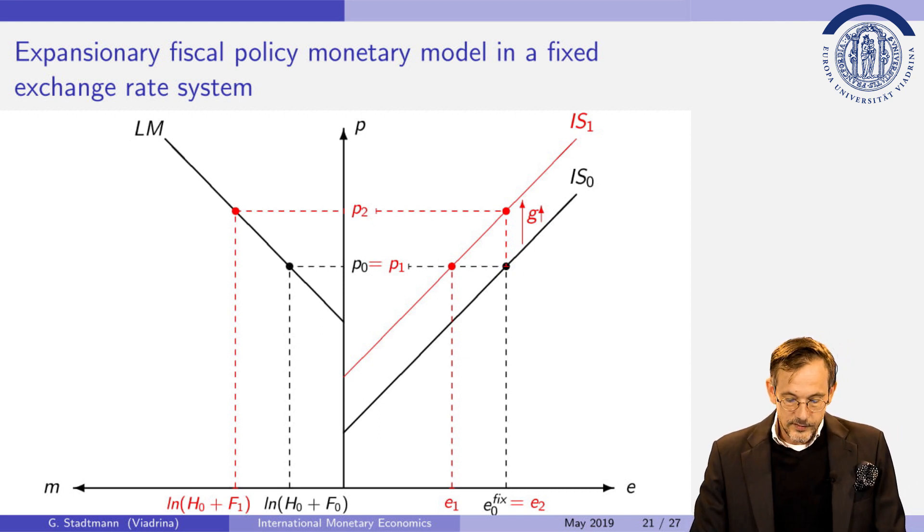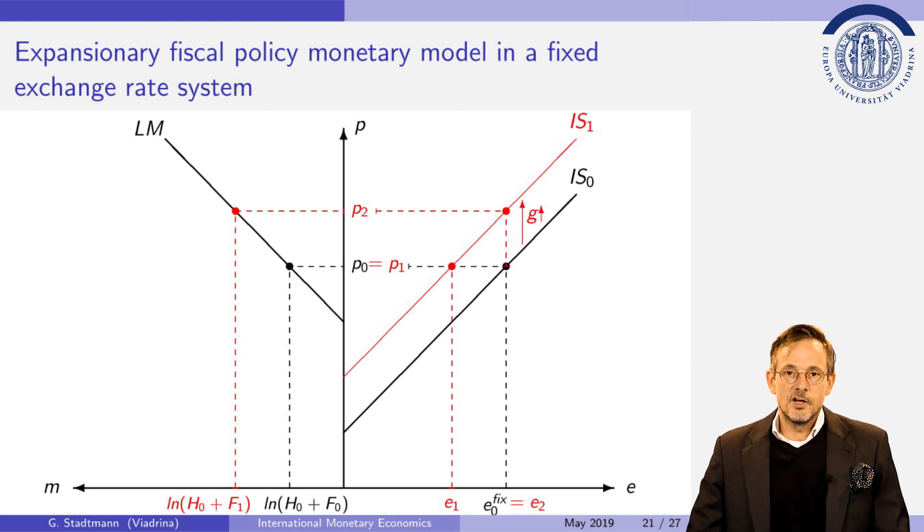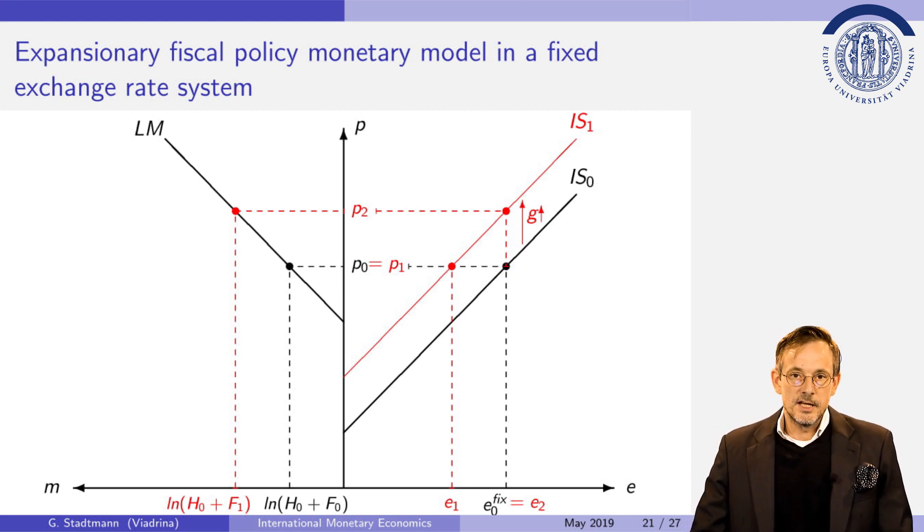The central bank has to intervene in the foreign exchange market until the exchange rate reaches the initial level E0. Therefore we know that the goods prices will increase to the level P2. So inflation is a problem in this situation. Goods prices increase and it is also the case that money supply will increase.